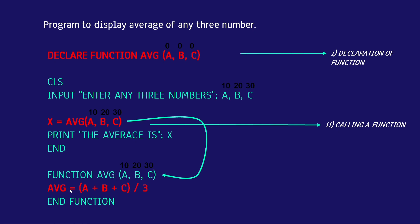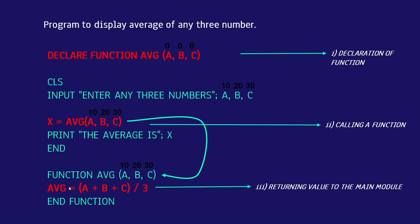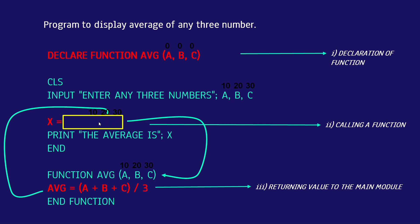Now we do the calculation. I have written: abc = (a + b + c) / 3. Here abc is the function name, and by assigning to the function name you are returning a value to the main module. So 10 + 20 + 30 divided by 3 equals 20. By writing this, we are returning the value 20 to the main module, specifically to the line where the function was called.